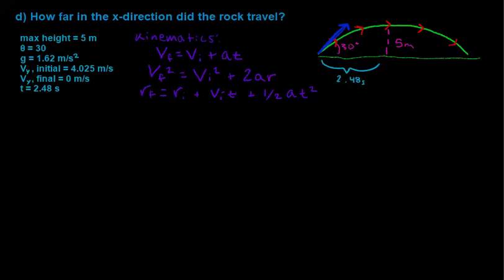We've moved on to Part D of our rock launch from the surface of the moon problem, and this is our final part. It asks how far in the x-direction did the rock travel. We are given the initial values that we've been given or solved for, now including the time value solved for in Part C, highlighted in the diagram from the start of the launch up until the rock's 5-meter distance in the y-direction. But now, we have to focus on how far in the x-direction the rock traveled.